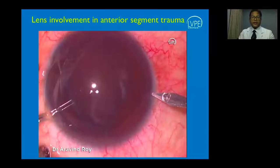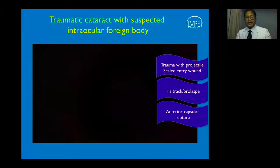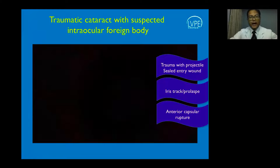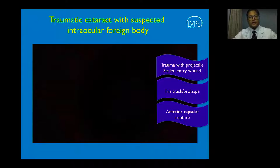When dealing with a suspected intraocular foreign body—evidenced by an entry wound, iris track, and capsule rupture—suspect that a foreign body is in the bag or body of the lens. These cases are niduses for subsequent infection. It is important to extract the lens in total, leave the eye aphakic, examine the retina, and if needed, a secondary vitreoretinal intervention can also be done.